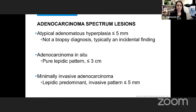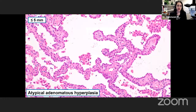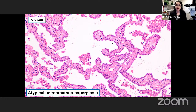Here are adenocarcinoma spectrum lesions. Atypical adenomatous hyperplasia (AAH) is not a biopsy diagnosis — it's typically incidental, measuring less than or equal to 5 mm. Adenocarcinoma in situ is a pure lepidic pattern, less than or equal to 3 cm. Minimally invasive adenocarcinoma is lepidic predominant with invasion less than or equal to 5 mm — and remember, invasion is any pattern other than lepidic. Here is an example of AAH: mild atypia of pneumocytes with some alveolar septal thickening, typically found incidentally in lobectomies.